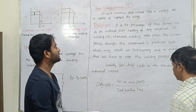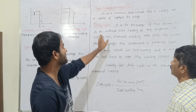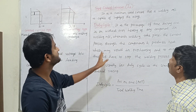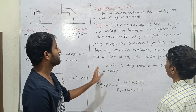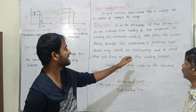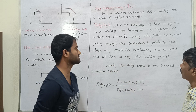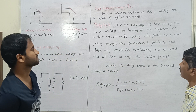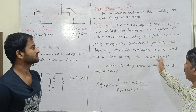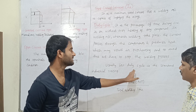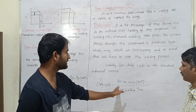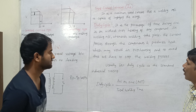What is the duty cycle? The duty cycle is the percentage of time during which the arc is on without overheating of any component in the welding machine. Whenever welding takes place, the current passes through the components and produces heat, which may result in overheating. To avoid this, we have to stop the welding process. Usually, 60% duty cycle is the standard industrial rating. The formula is: duty cycle equals arc on time divided by total welding time.